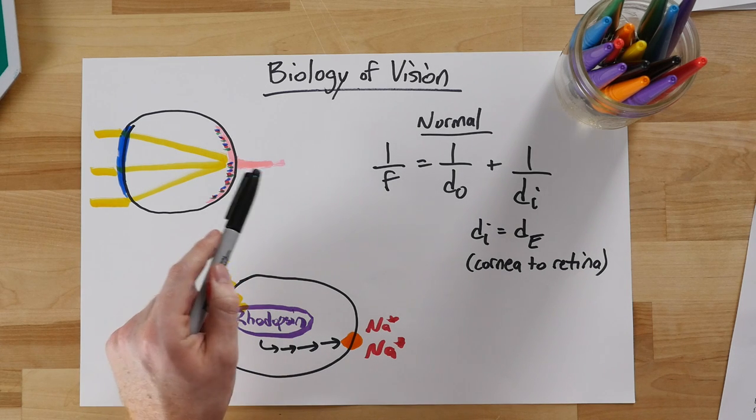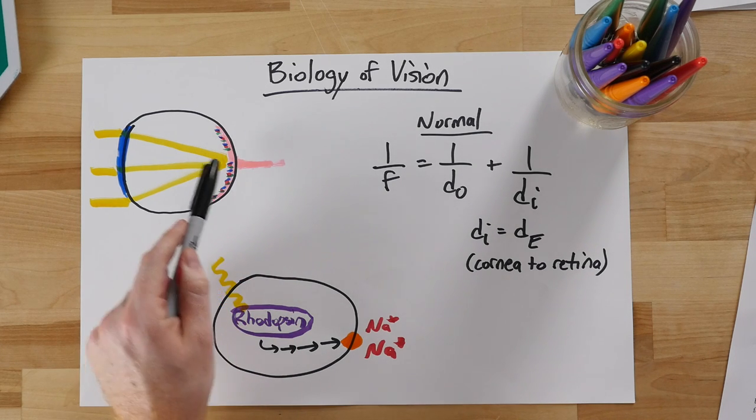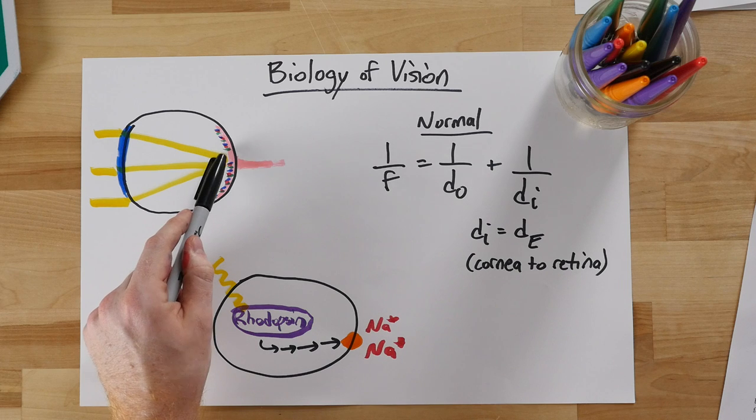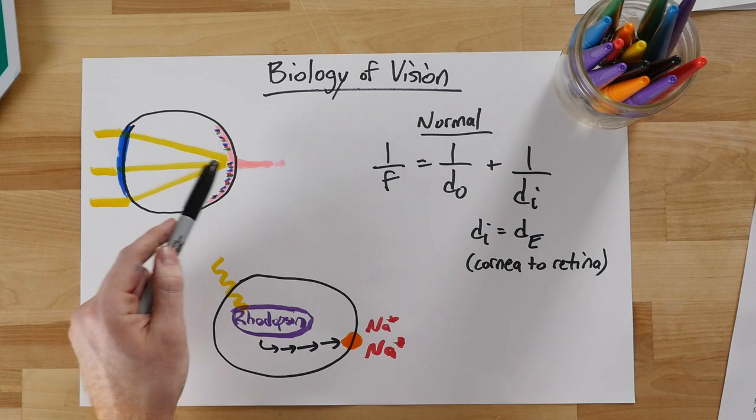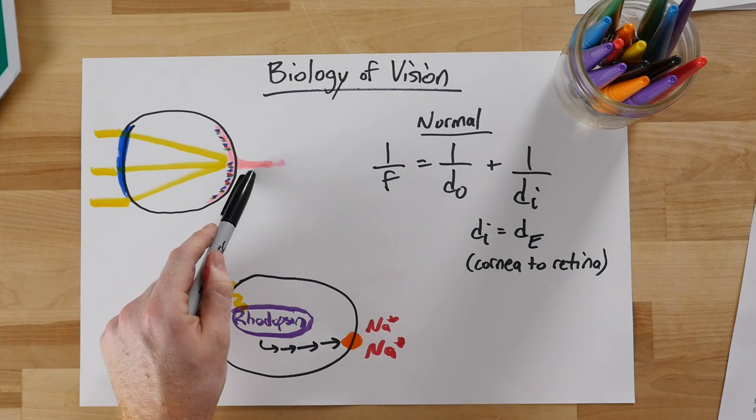Rods help sense light based on dimness and brightness, while cones help us sense red, blue, and green light. All the colors we see depend on activation of cones to be combined and interpreted as a spectrum of colors that we actually see.